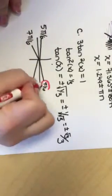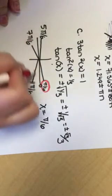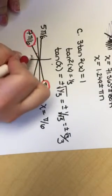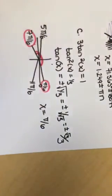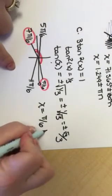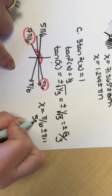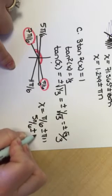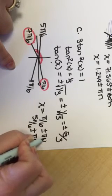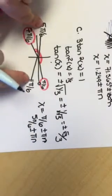Well, the 7 pi over 6 and the pi over 6, these two, those are pi apart. So, I can do pi over 6 plus or minus pi n, and I also can do my 5 pi over 6 plus or minus pi n, because my 5 pi over 6 and my 11 pi over 6 are also pi apart.